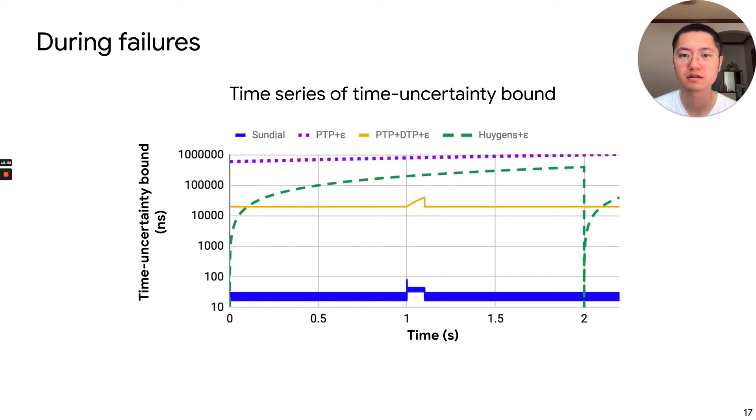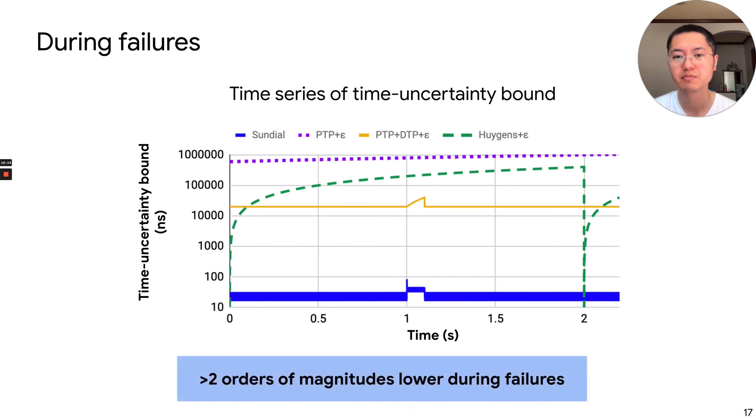During the failure, we zoom into the details by looking at the time series of the time uncertainty bounds. And we take an example of a link failure. Other failures are very similar. We can see that Sundial consistently bounds the time uncertainty below 100 nanoseconds, which is more than two orders of magnitude lower than other schemes.